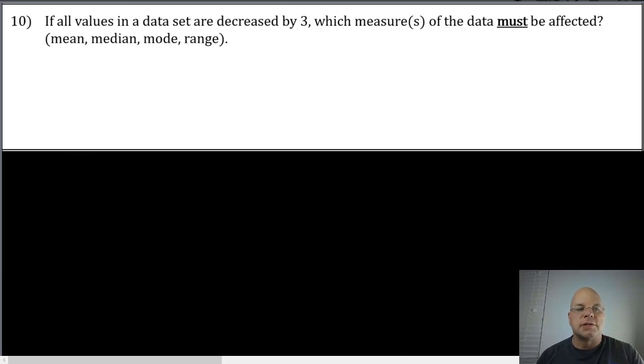Problem number ten says if all values in a data set are decreased by three, which measure or measures of the data must be affected? Again, with this word must. That means one of these measures might be affected with a certain data set, but with a different type of data set, maybe it's not affected. I consider this a rather challenging problem.